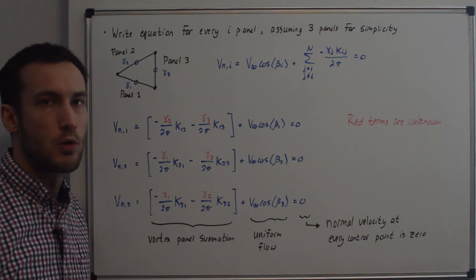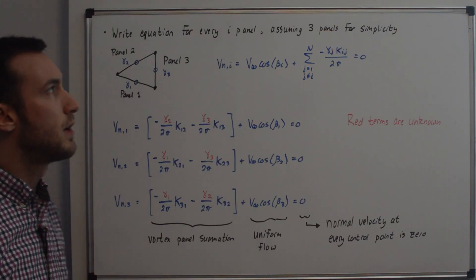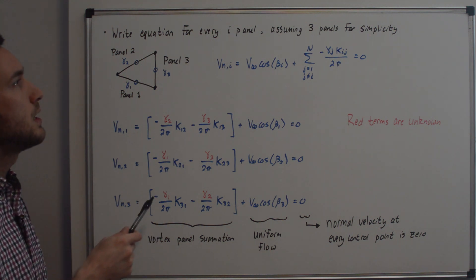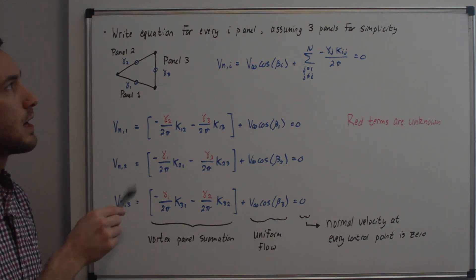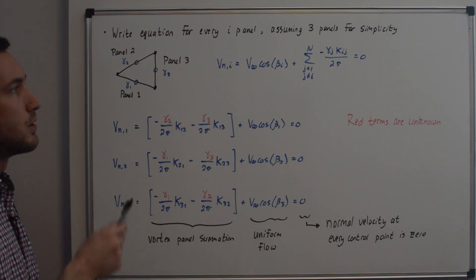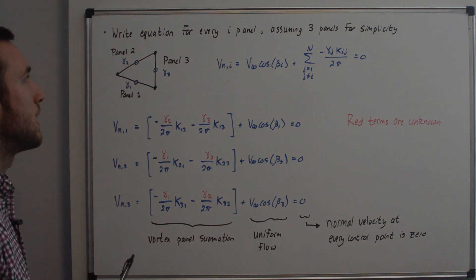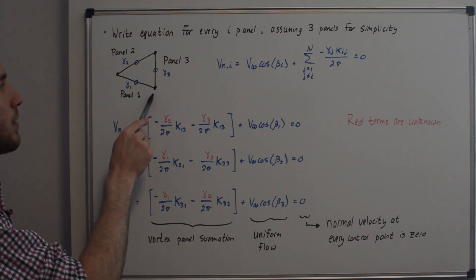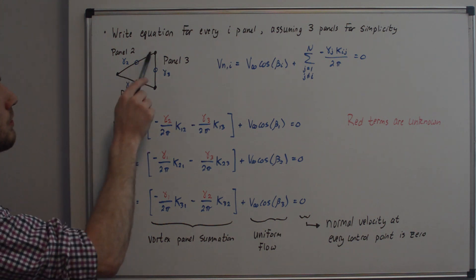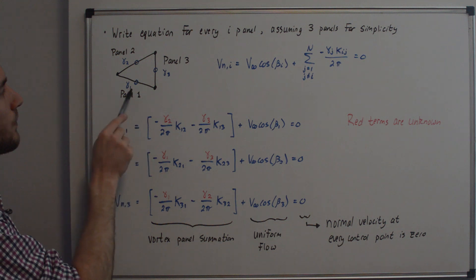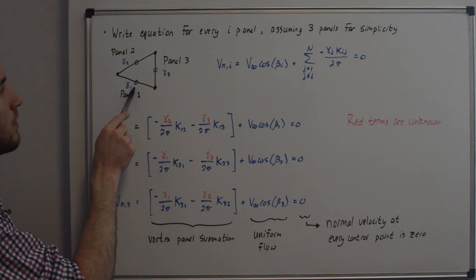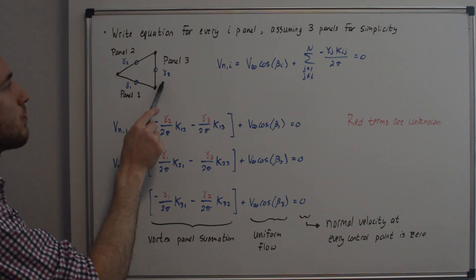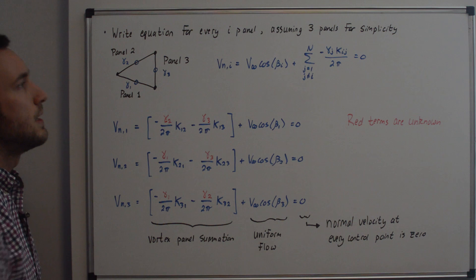To create the system of equations, we're going to simplify this down into a three-panel geometry and write the normal velocity equation for every single i panel. So we have panel 1, panel 2, panel 3, with vortex strengths gamma_1, gamma_2, and gamma_3 respectively. This is the same normal velocity equation from the previous whiteboard.